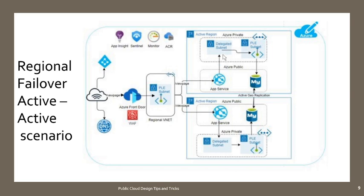From my App Service, since it's a multi-tenant App Service I'm using a delegated subnet. If you are using App Service Environment — that is a single-tenant App Service — then you can place it directly within your virtual network. From the delegated subnet I'm using my own private link endpoint, not the one provided by Front Door, which is linked to my MySQL database, so the entire traffic will be completely private and will never go to the public network.